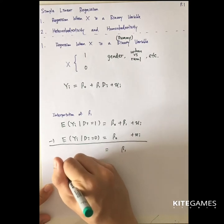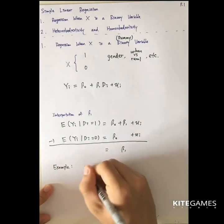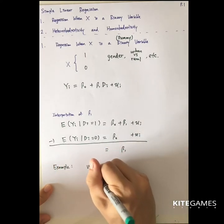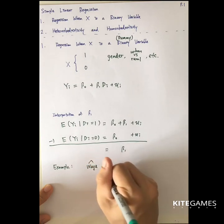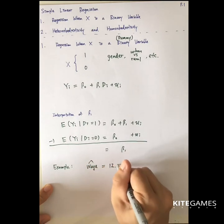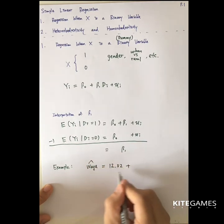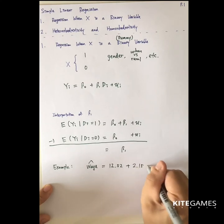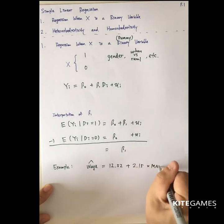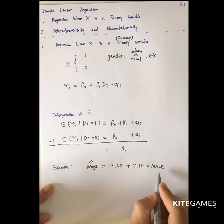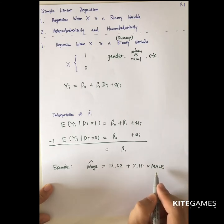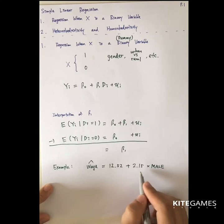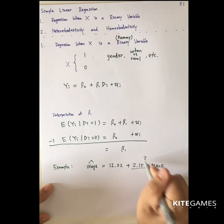Let's look at an example. Say you are a researcher and you find that the wage rate is equal to some constant plus 2.15 times the dummy variable male. For the dummy variable male, if you are male this equals 1, and if you are female this equals 0. So what does this 2.15 mean?